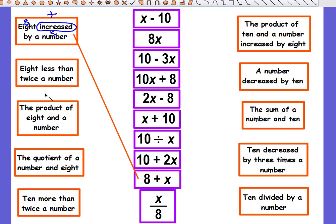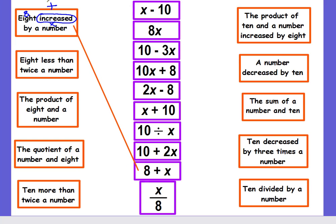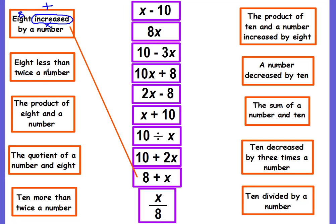Our next one: eight less than twice a number. Okay, twice a number - twice means that we're going to multiply, and we're going to multiply by two. That's what twice means. We don't know what the number is, so it's going to be x, that's the unknown variable. And eight less than - it's not eight less the 2x, it says eight is less than.